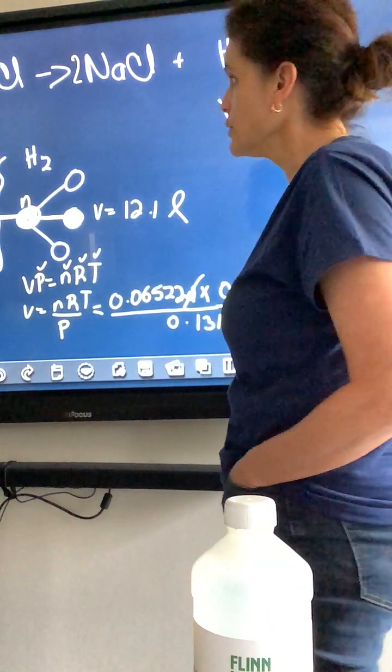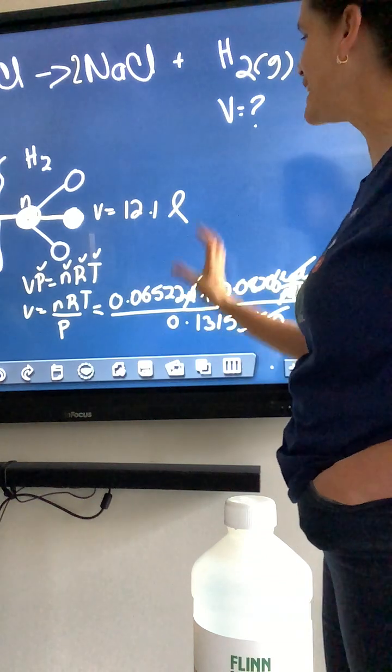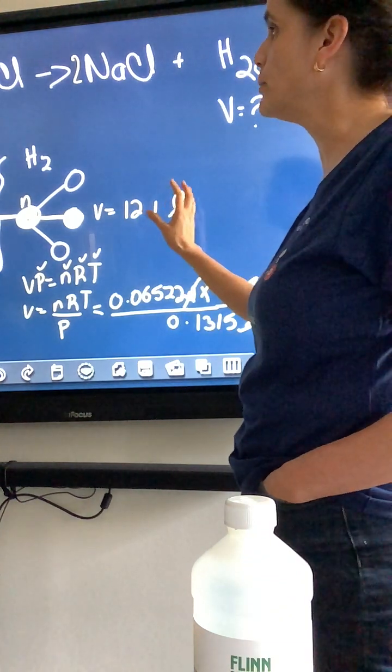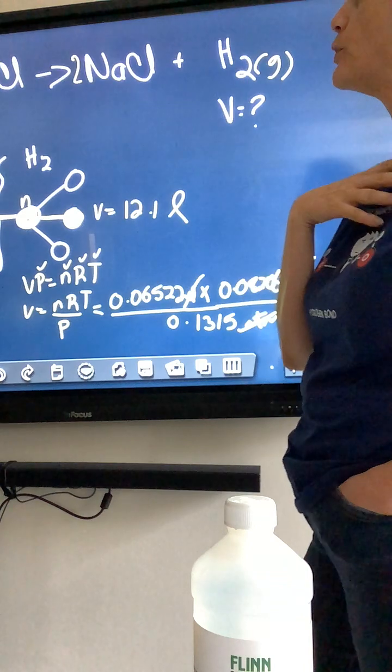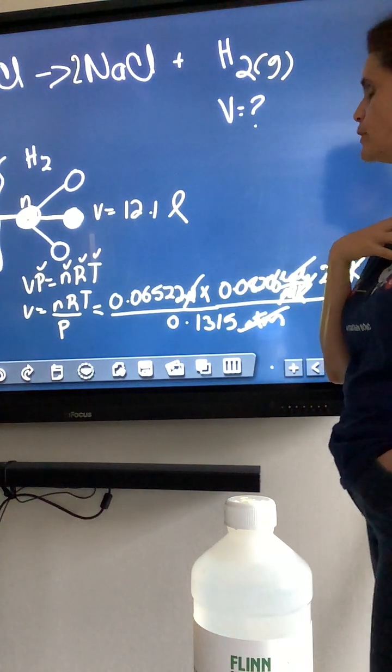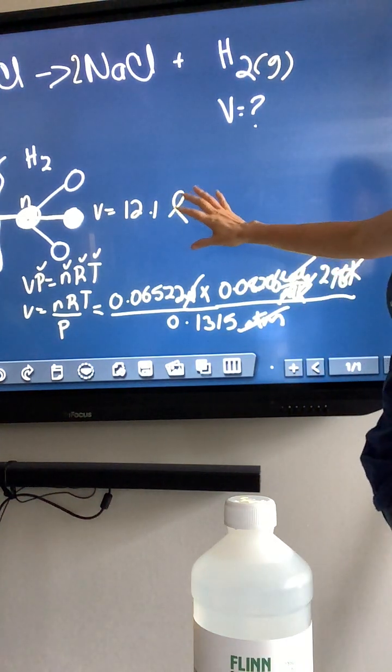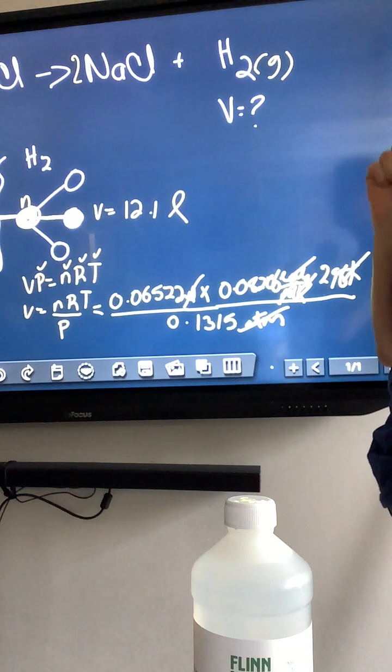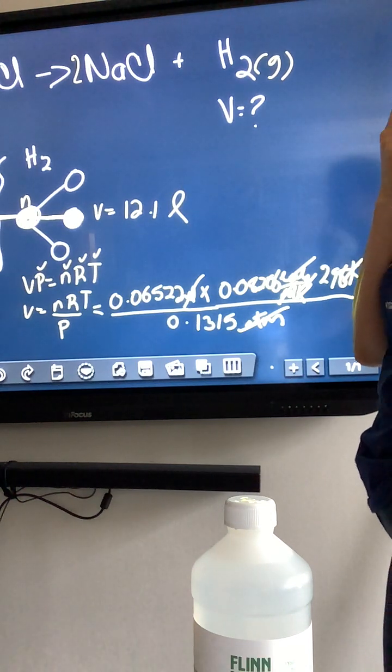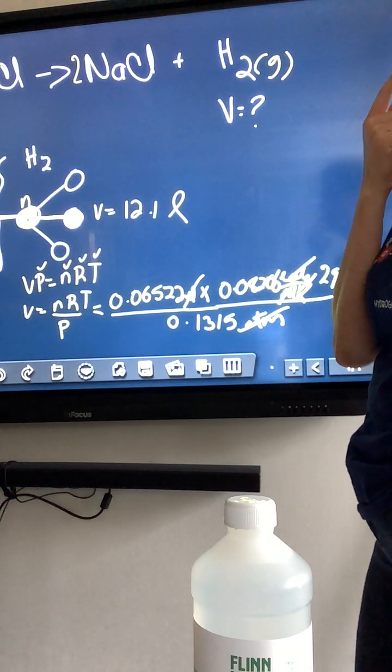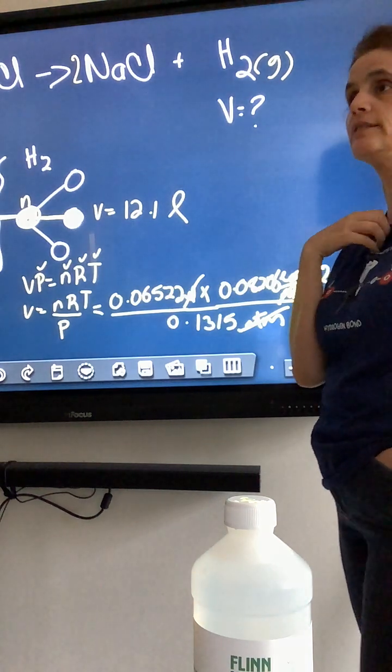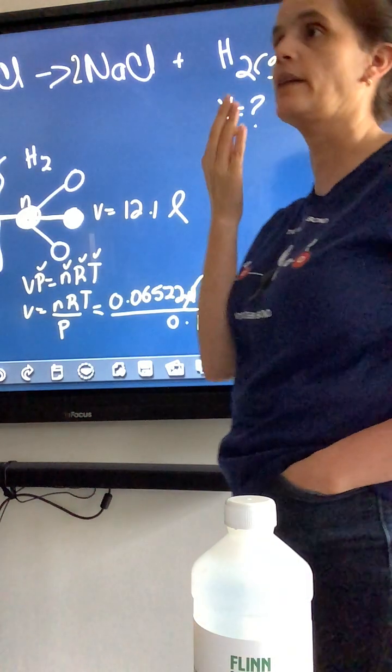And then you do all that calculation and you get to liters. So, the volume in liters is 12.13. What significant figures do I have? Now we go to three significant figures. So, it's 12.1 liters. You do all your calculations and then you round to the amount of measure. I gave you three, so we're going to round to three significant figures.